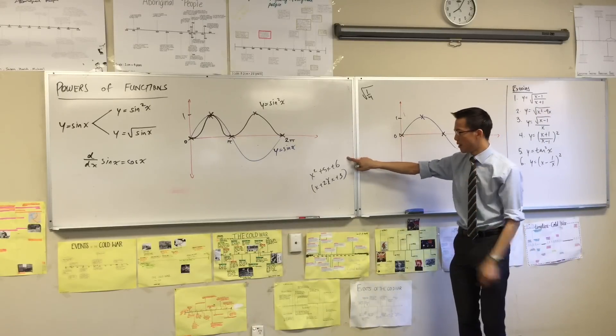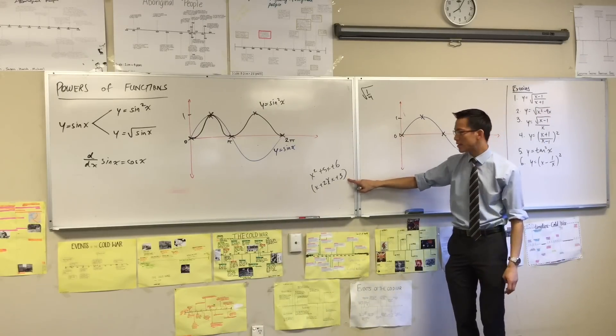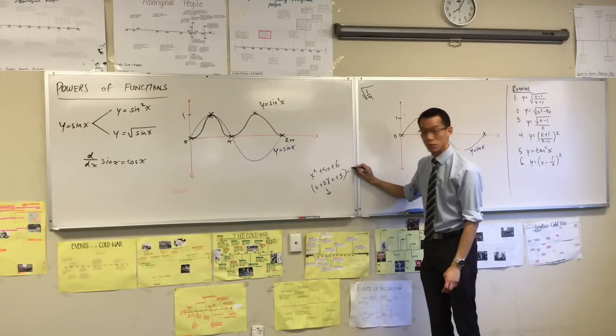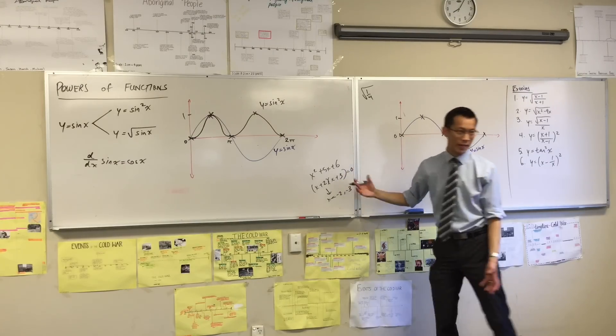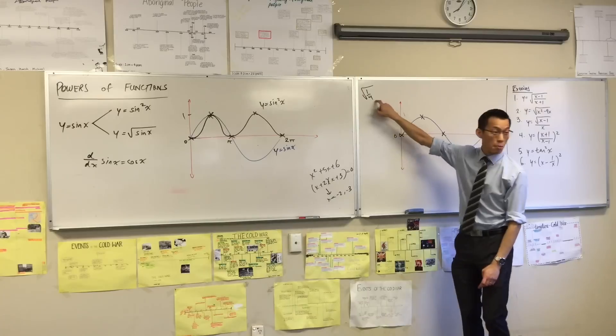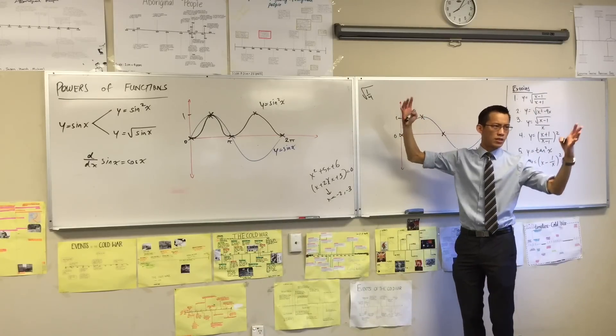Now I always come back to this one, because I can do this in my sleep, and it's like, oh well, this means that if it's equal to 0, then x is negative 2 and or negative 3, okay? So this is my example that I always go to.